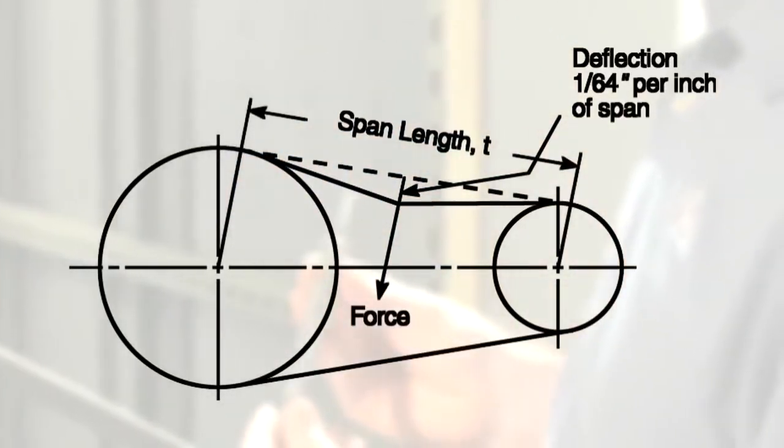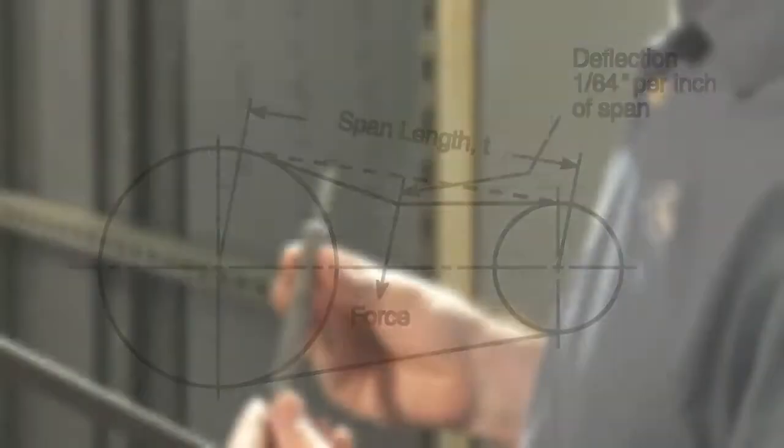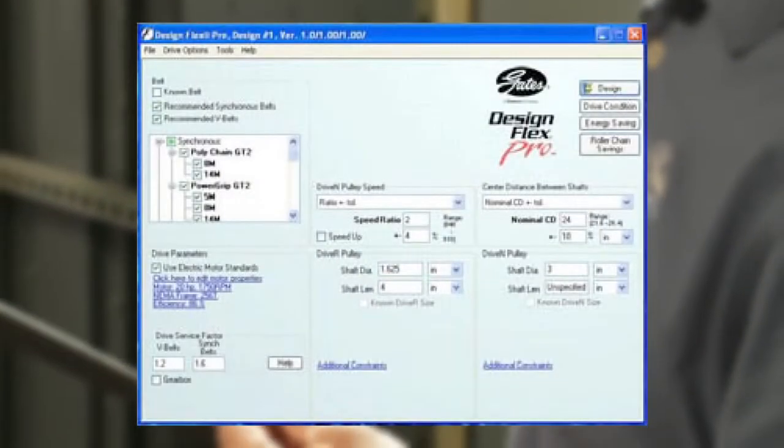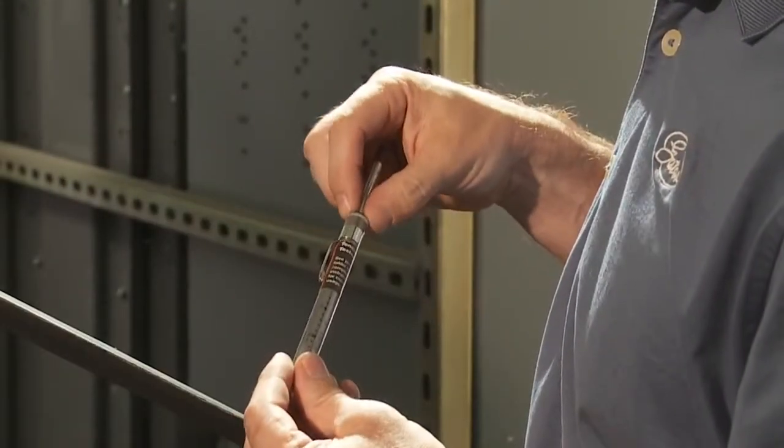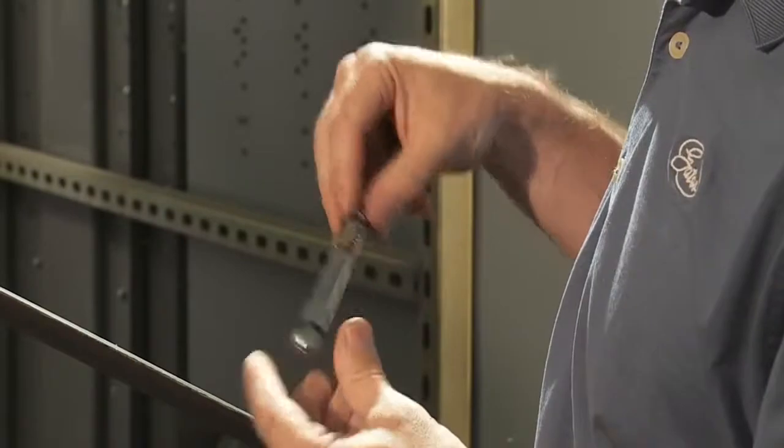The most accurate way to determine the tension values is by entering the parameters of your belt drive into the Gates DesignFlex Pro design software or by cross-referencing them in the engineering section of the Gates Belt Drive Design manuals.